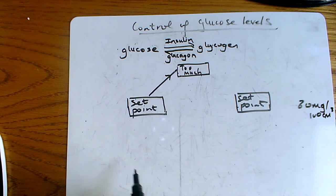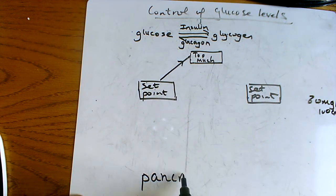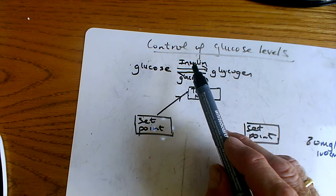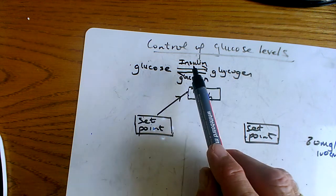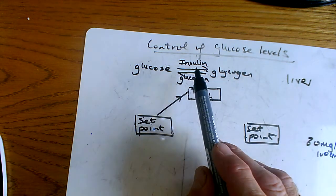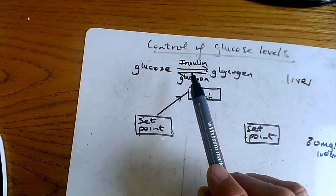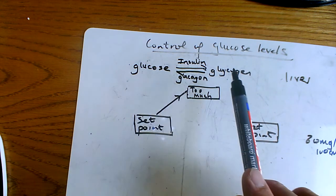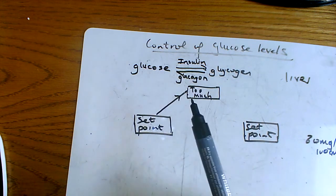So what happens is this: as the glucose goes through an organ in the digestive system called the pancreas, cells of the pancreas detect that there's too much glucose in your blood. And so what your pancreas does is it produces the hormone insulin, releases it into the blood. When the insulin gets around to your liver, it causes cells of your liver to convert the glucose into glycogen and it takes the glucose out of the blood.